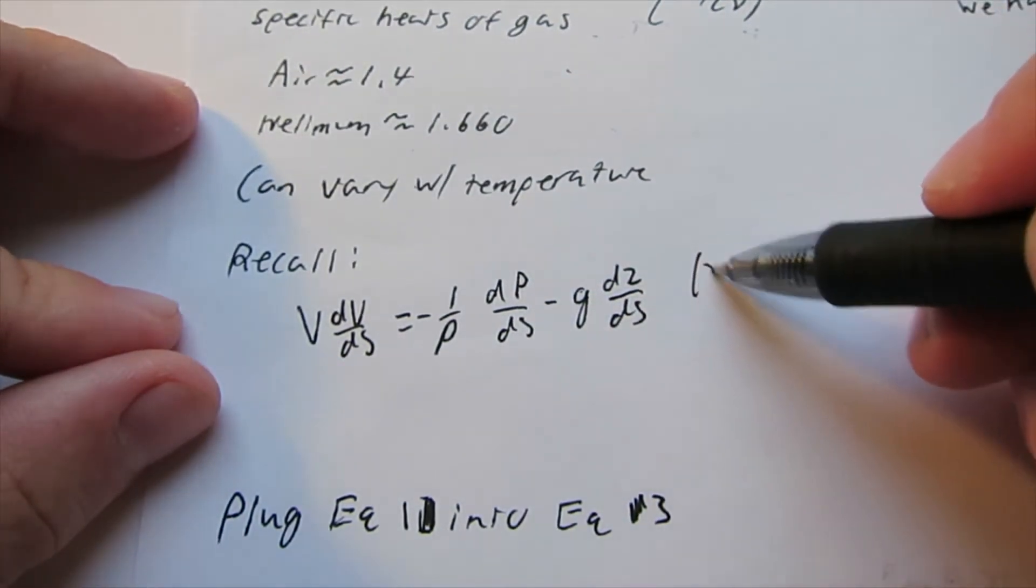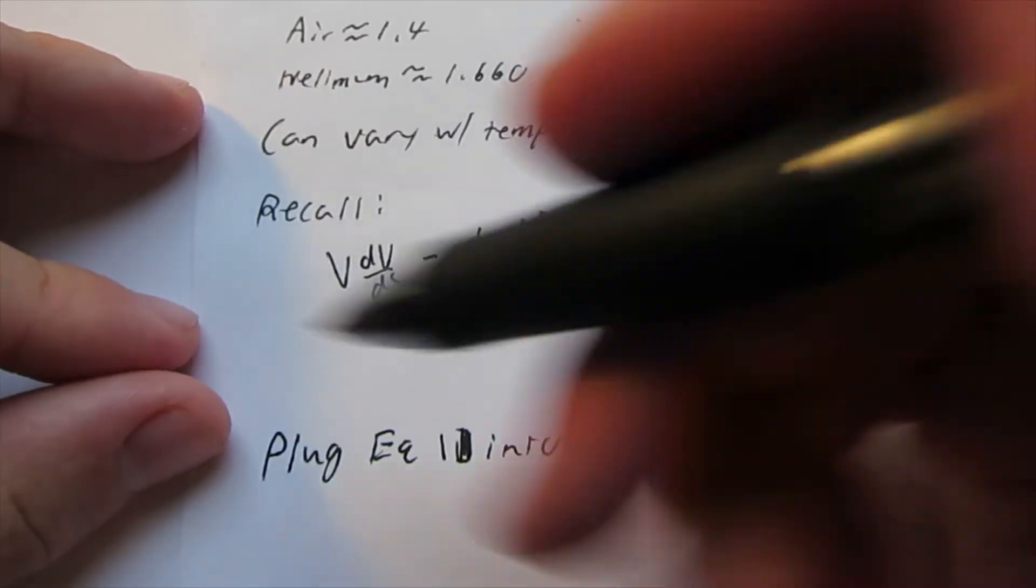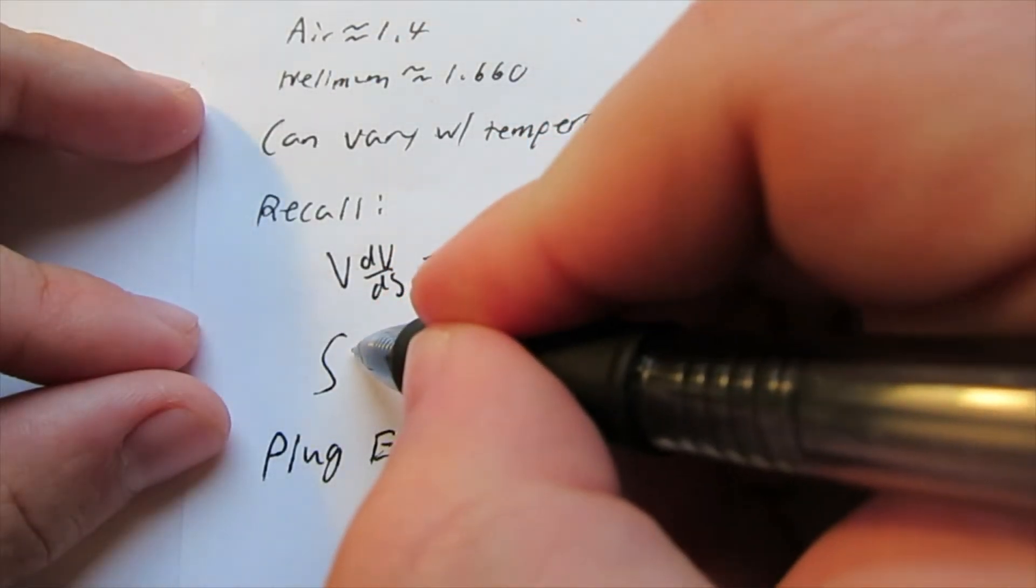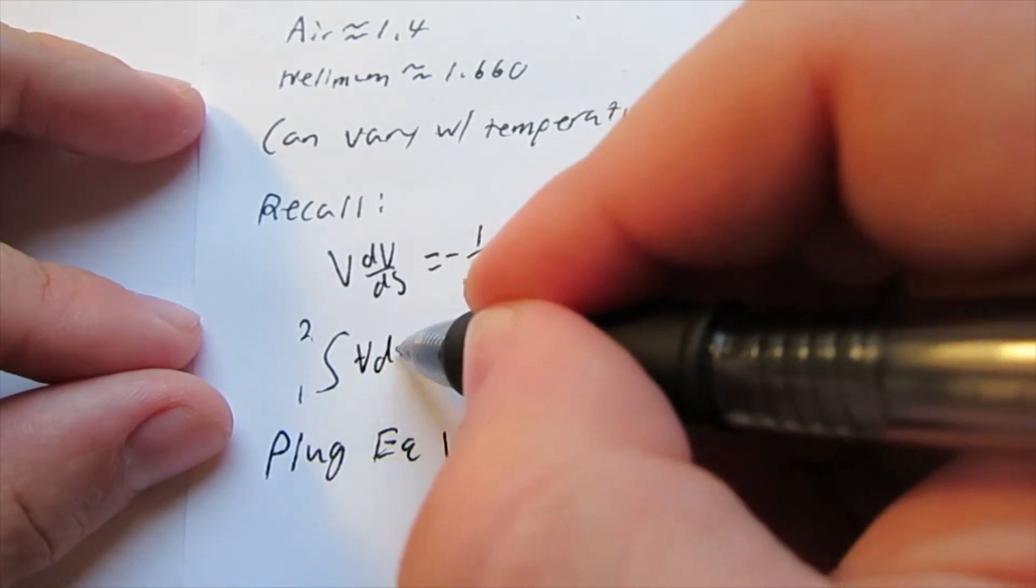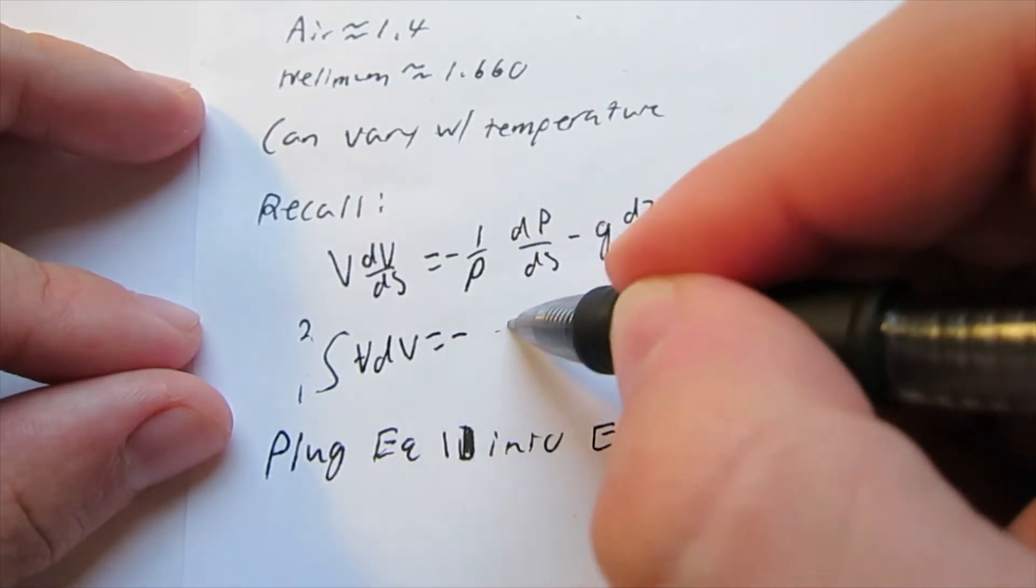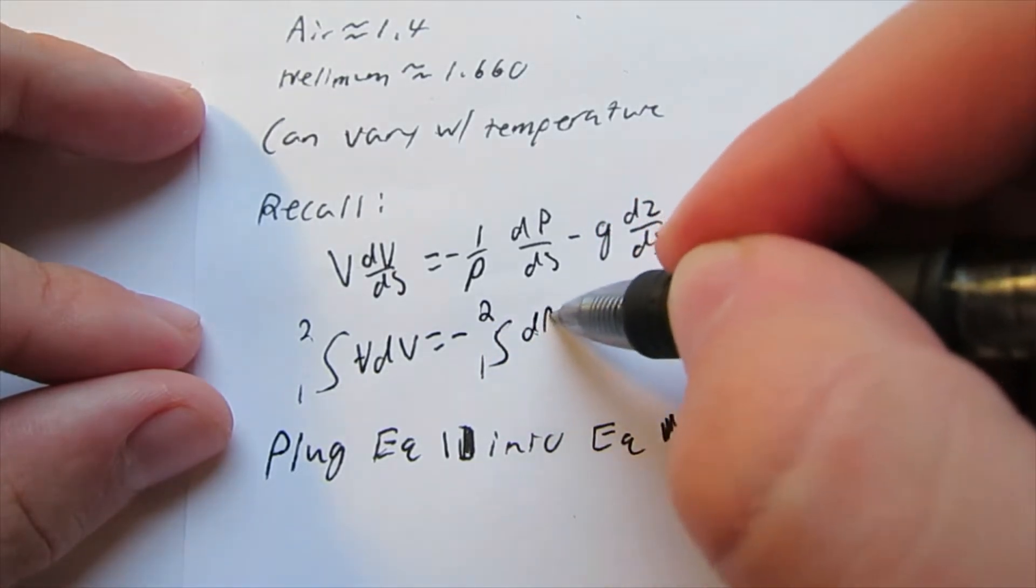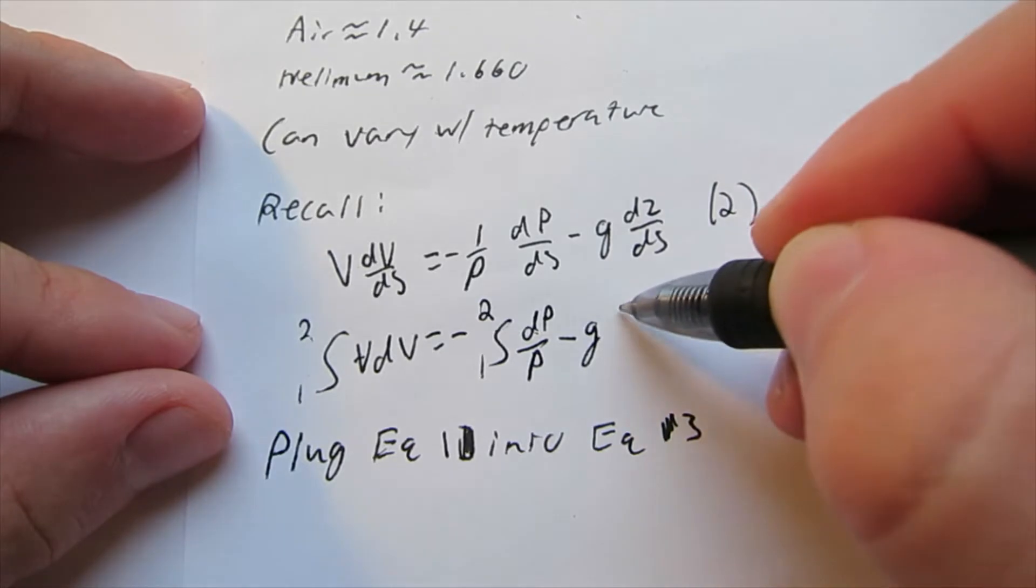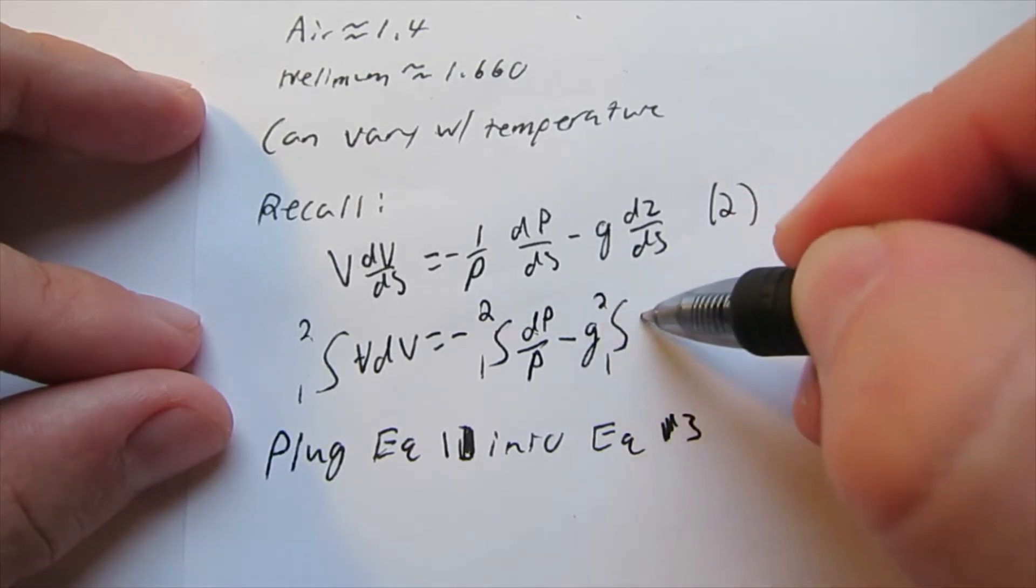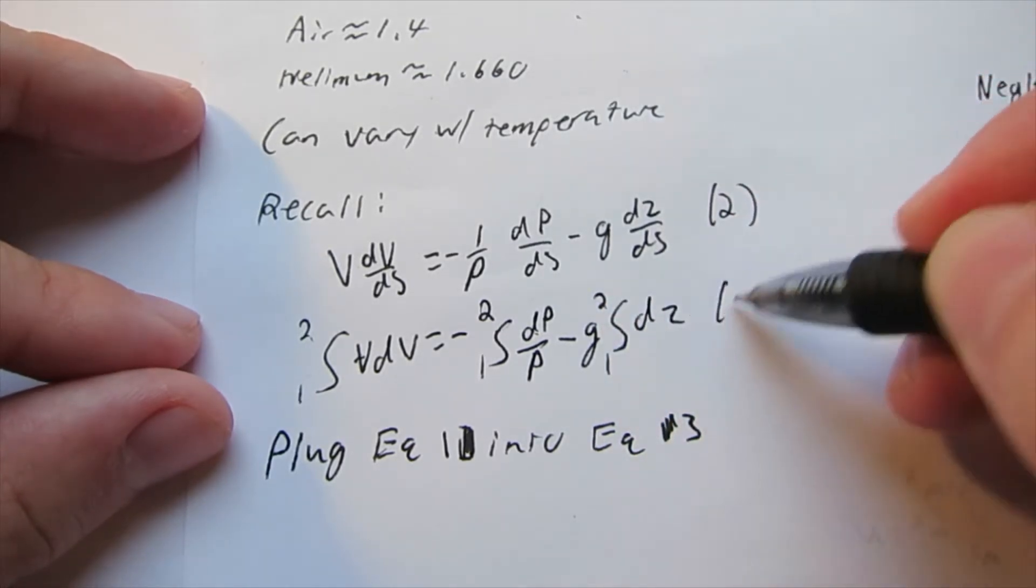We had this, we call this equation 2, and then along a streamline we have this integral, equation 3.